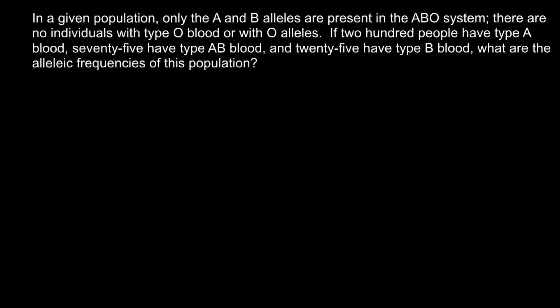Hi, in this video I am going to show how to find allelic frequencies. Here is a problem: in a given population, only the A and B alleles are present in the ABO blood system. There are no individuals with type O blood or with O alleles. If 200 people have type A blood, 75 have type AB blood, and 25 have type B blood, what are the allelic frequencies of this population?